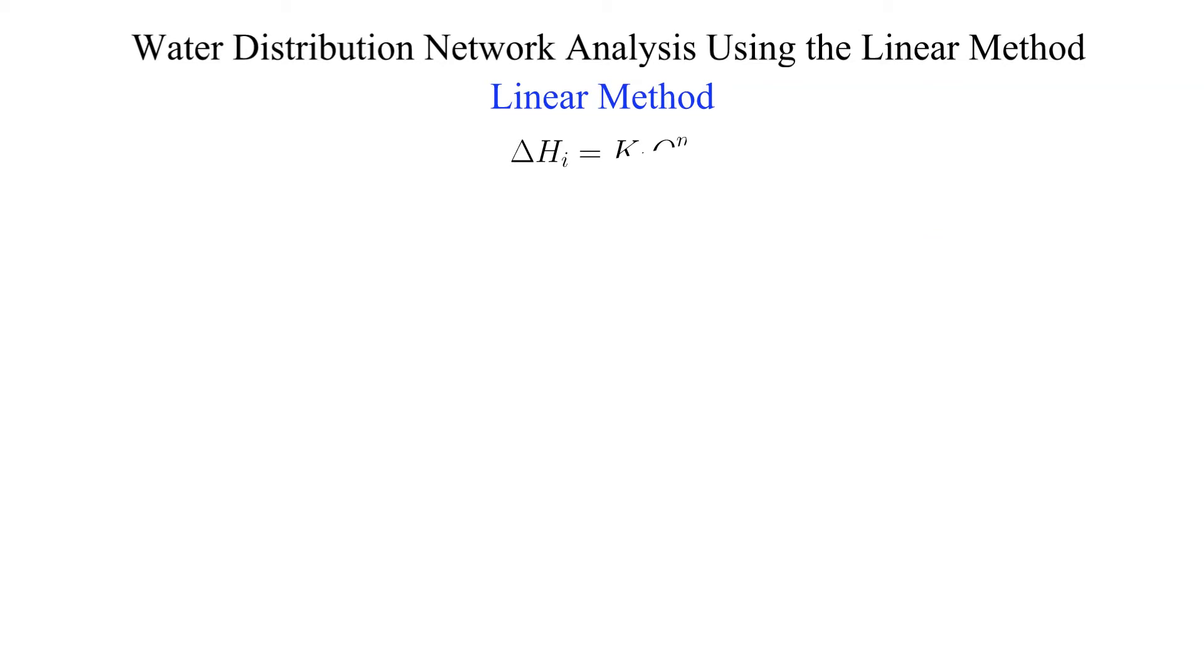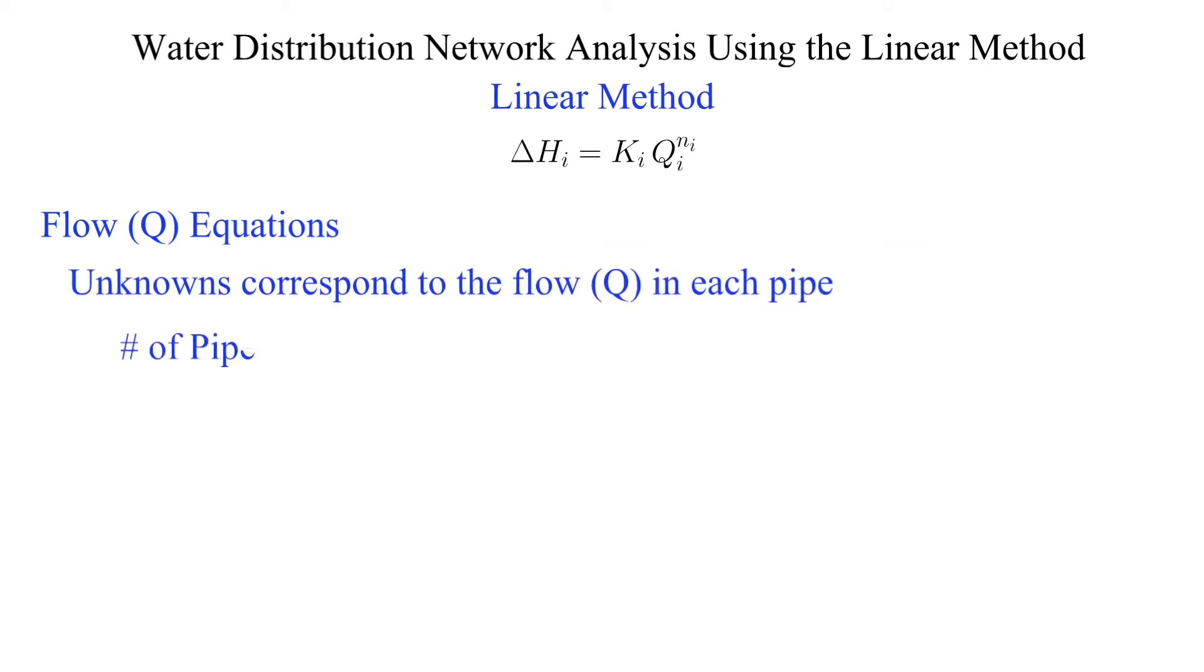First let's set up the flow equations. There are different approaches to define the necessary equations to solve a network. One approach is the so-called head equations where the head of each node are the unknowns. In the flow equation the flows in each pipe are the unknowns. In this example with the linear method we will use the flow equations. The number of pipes in this example is three so we will need three equations.